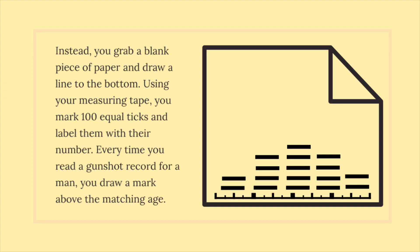you grab a blank piece of paper and draw a line to the bottom. Using your measuring tape, you mark 100 equal ticks and label them with their number. Every time you read a gunshot record for a man, you draw a mark above the matching age.